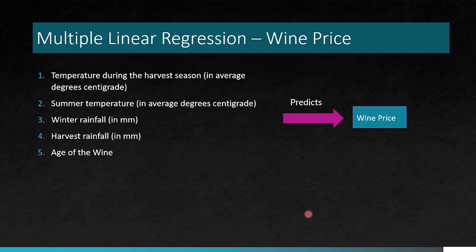The multiple linear regression of the wine price that we were talking of. So the wine price is the predicted variable and what are the predictors? The temperature during the harvest season in average degrees centigrade, the summer temperature, the winter rainfall, harvest rainfall, and age of the wine. So these are the factors which are affecting the wine price. You get the idea that there are multiple variables affecting the wine price.